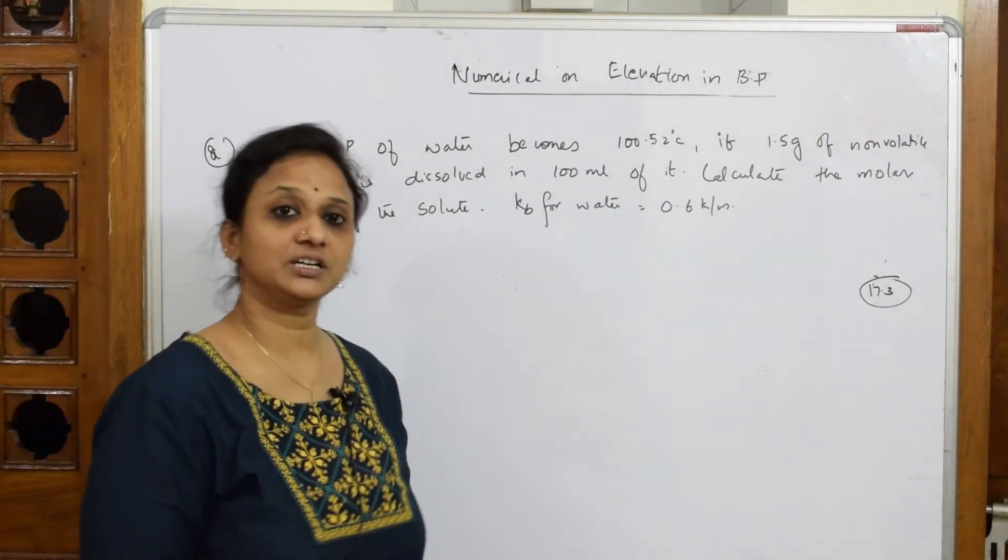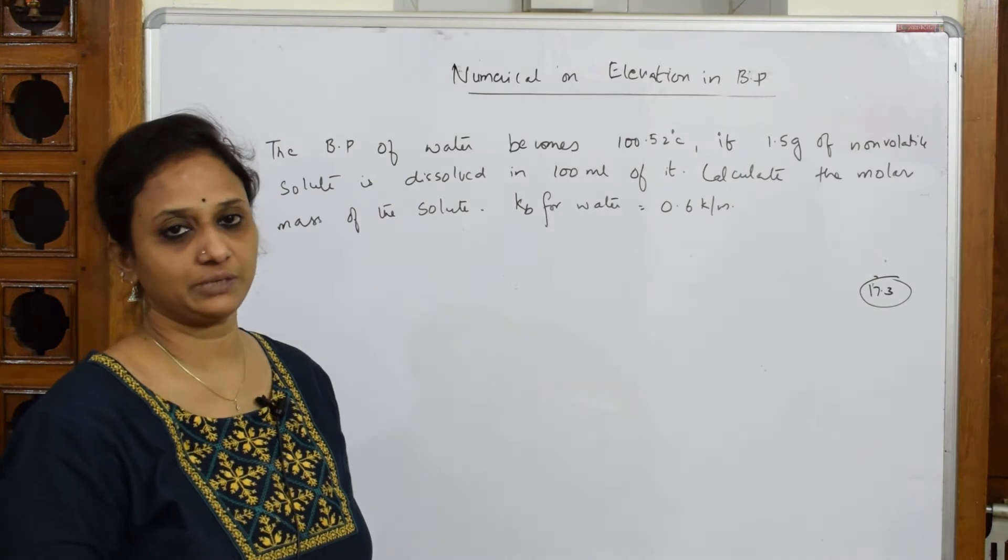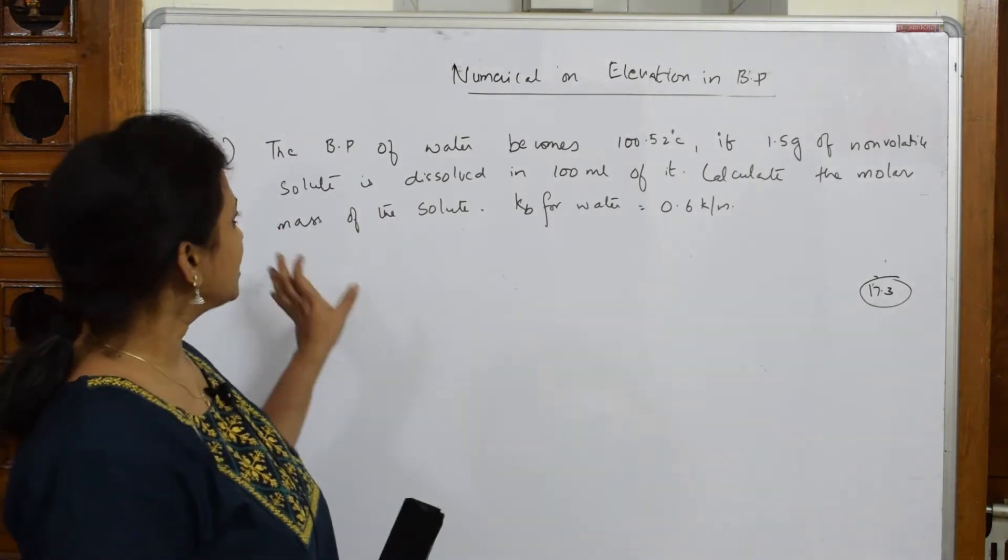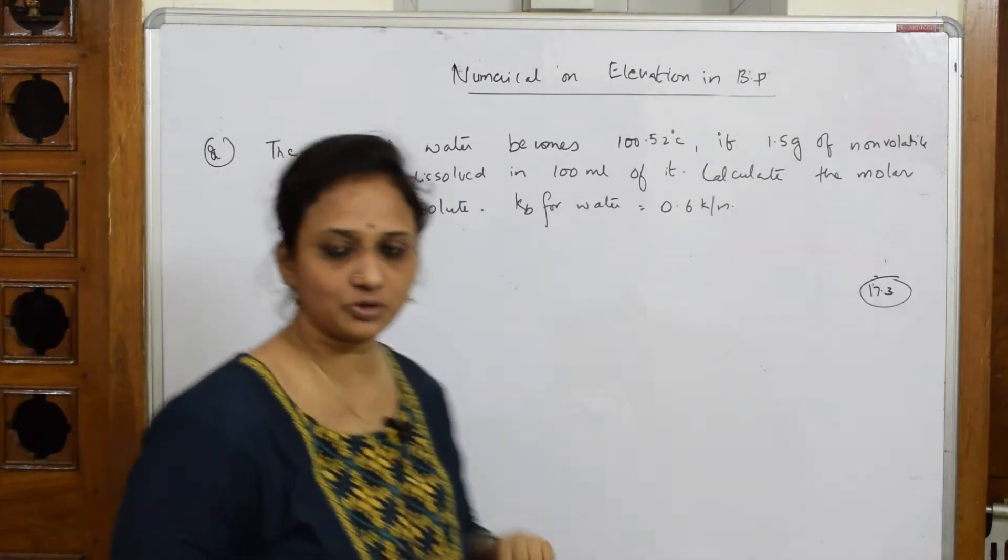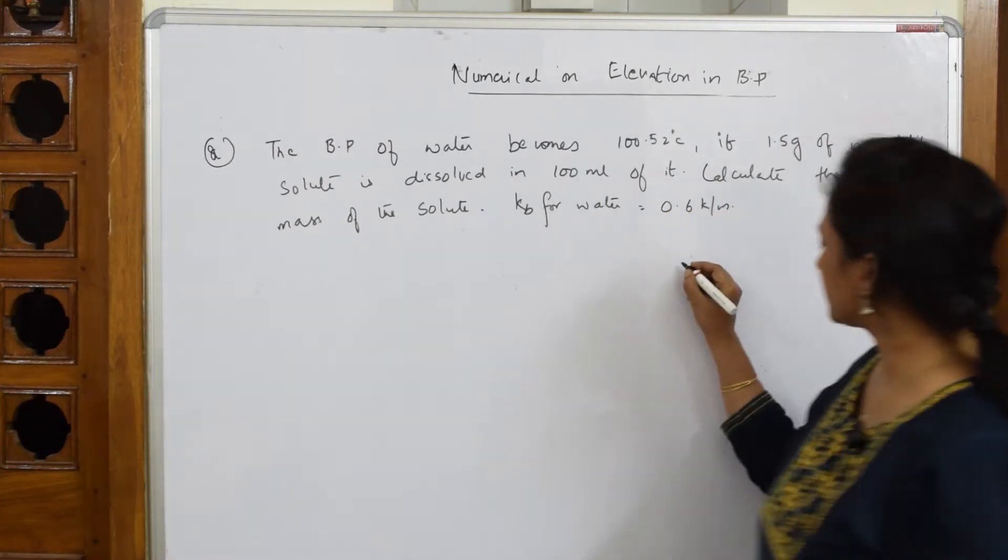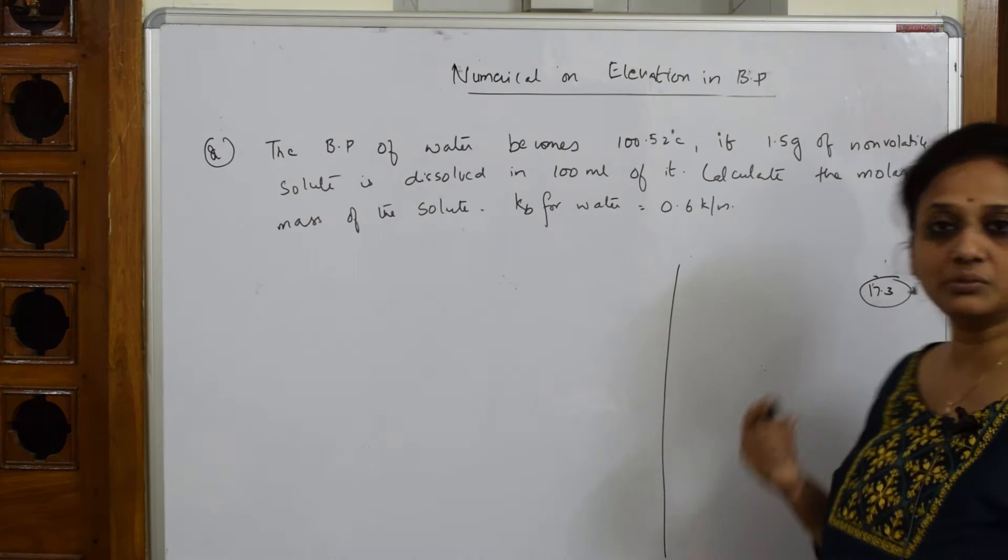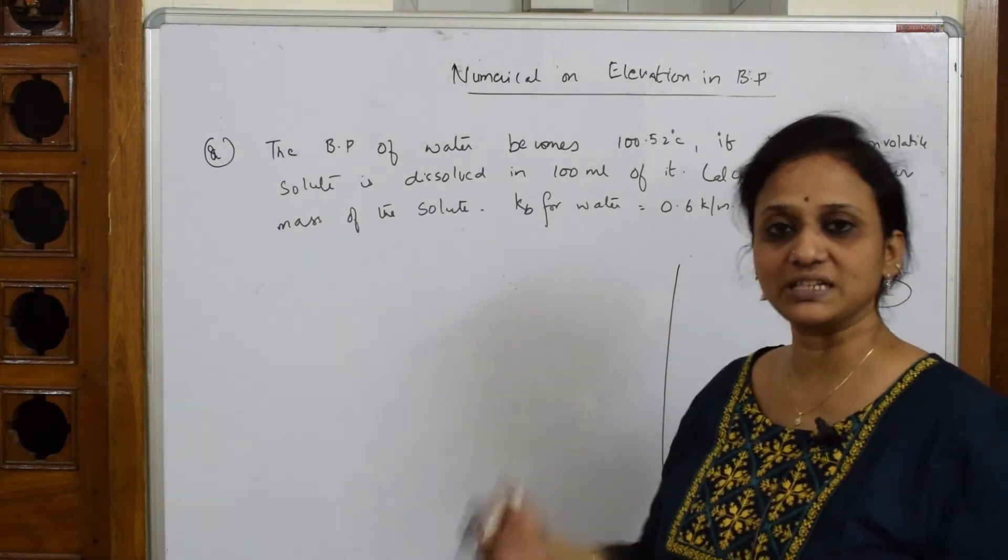Let us see one more type of numerical which is based on elevation in boiling point. Now again, same thing: as soon as a numerical is given to you, as soon as you see boiling point or that particular word, first try to write the formula. When you write the formula you will know what to substitute in that.